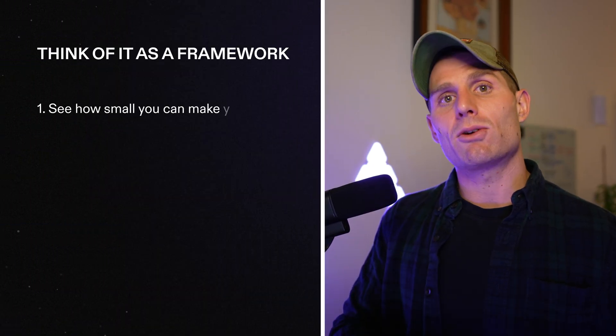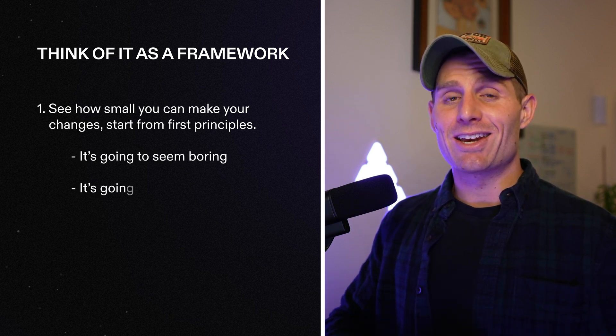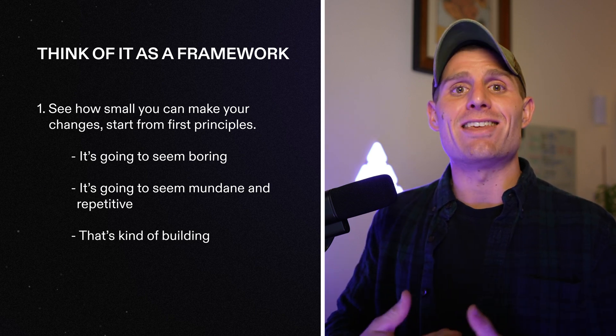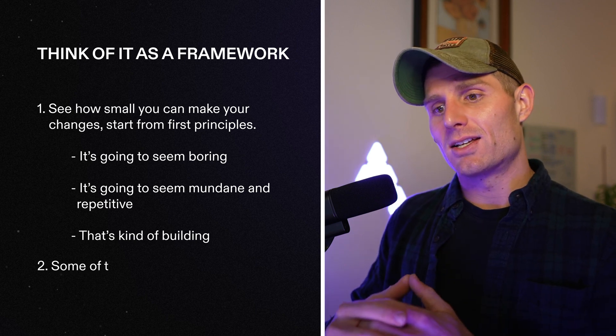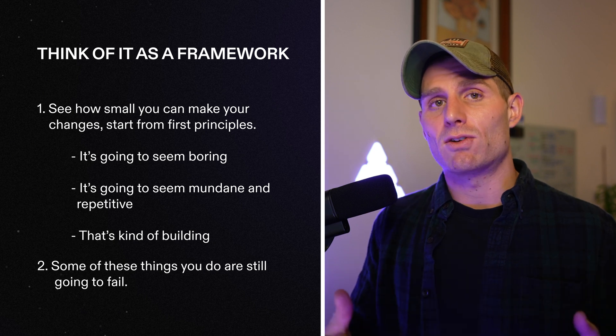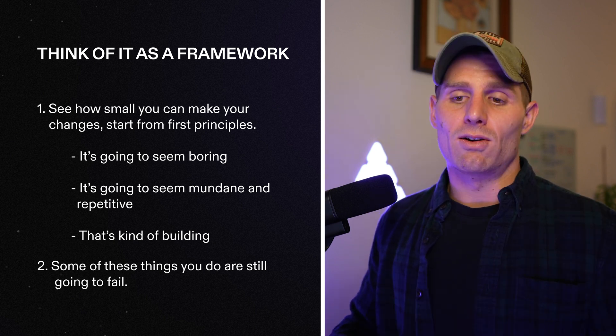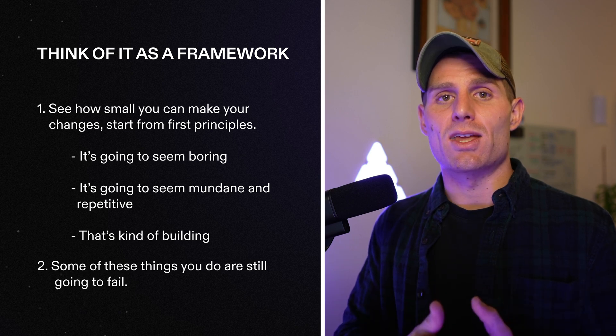If we're thinking about this as a framework: first, see how small you can make your changes. Really dig in, start from first principles, one step at a time. It's going to seem boring and mundane and repetitive — that's kind of building. Creating anything great means being creative to come up with the idea and then doing the hard work to break that idea down into tiny little steps. Second, some of these things will still fail, but that's the whole point — that's why you can revert things. In Replit, even without Agent or Assistant, you can always roll back your changes and scrub between versions with version control. Take those small changes, figure out how to make them even smaller, and use rollbacks and checkpoints as your fallback mechanism.